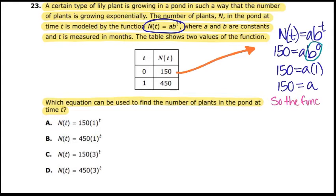So always start with your y-intercept because it's very useful because anything to the first power is 1 and it will help you try to find b, which is the growth factor in this case. So now I have n of t is equal to 150 times b to the t, because remember we just found a.